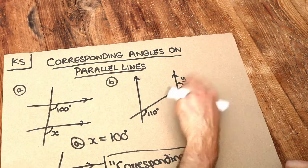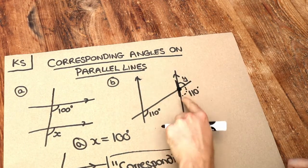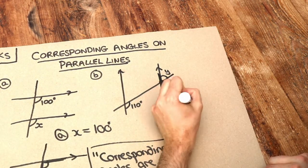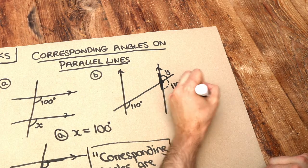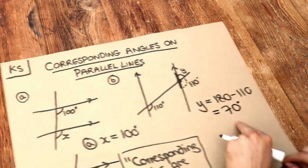And then at this point, we need to find Y. Well, notice we've got angles on a straight line. So the angles around that point on that straight line need to add to 180. So Y is just 180 minus that 110. And that is equal to 70 degrees.